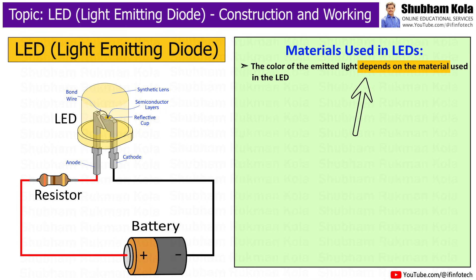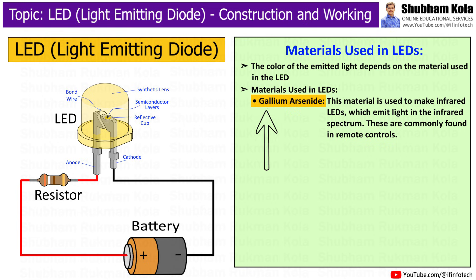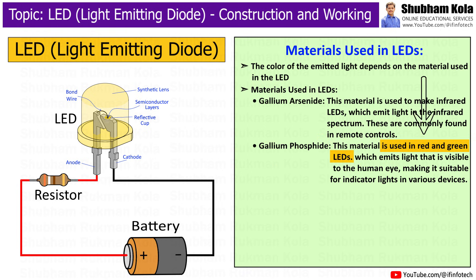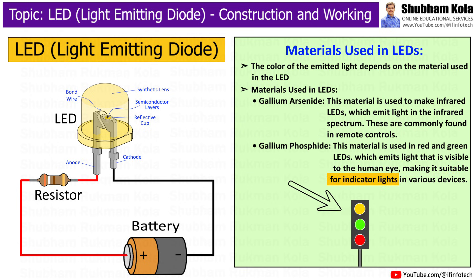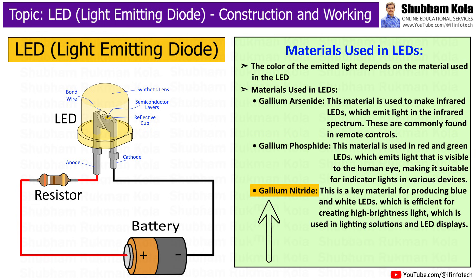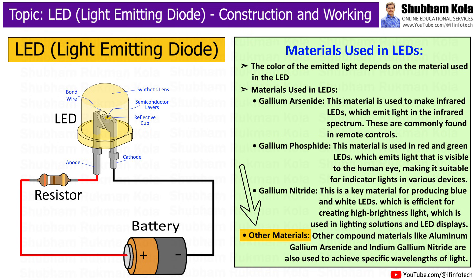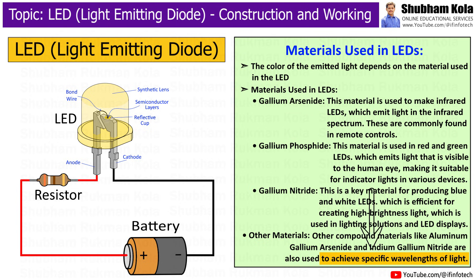The color of the emitted light depends on the material used in the LED. Gallium arsenide is the material used to make infrared LEDs, which emit light in the infrared spectrum and are commonly found in remote controls. Gallium phosphate is the material used in red and green LEDs, which emit visible light, making it suitable for indicator lights in various devices. Gallium nitride is the key material for producing blue and white LEDs for high-brightness light, used in lighting solutions and LED displays. Other compound materials like aluminum gallium arsenide and indium gallium nitride are also used to achieve specific wavelengths of light.